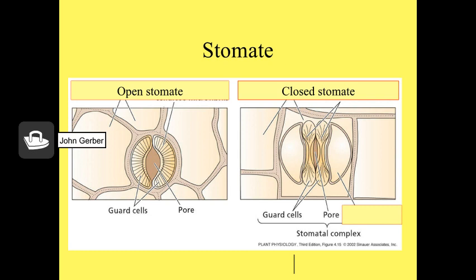Stomates are pores for gas exchange. They may occur on both leaf surfaces, but there are generally more of them on the lower leaf surface than the upper, because the lower leaf surface is protected from the sun. Special epidermal cells called guard cells — you can see two guard cells and the open pore in between — respond to environmental stimuli such as weather and light. They regulate the passage of water, oxygen, and carbon dioxide in and out of the leaf.